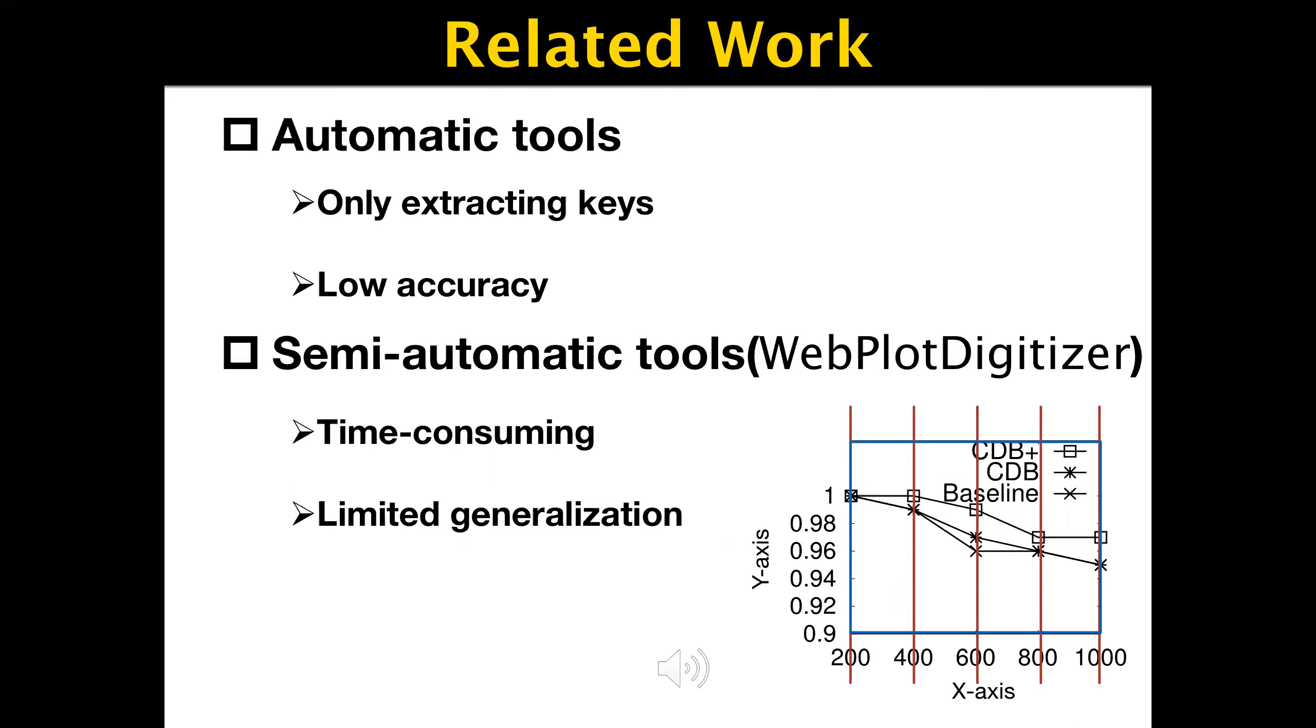For semi-automatic approaches, such as WebPlot Digitizer, which is a digitizing tool that extracts data from bar, line, or pie charts with both automatic and manual modes. Since the automatic mode has low accuracy due to simple color detection algorithms, people tend to use the manual mode. In this mode, users must specify necessary information, such as the location of x-axis, which is tedious and time-consuming, especially for multi-series data. Moreover, these approaches set many constraints like distinct colors for each series, which limits generalization.